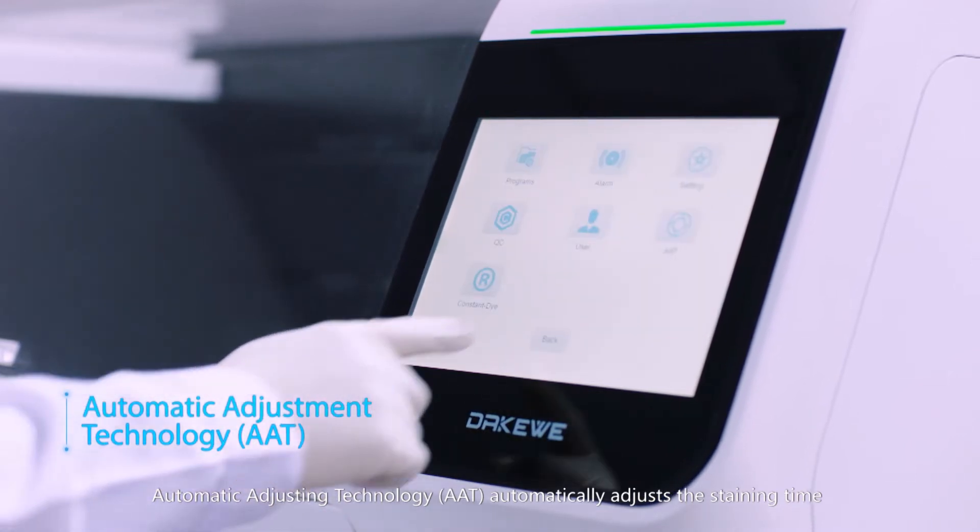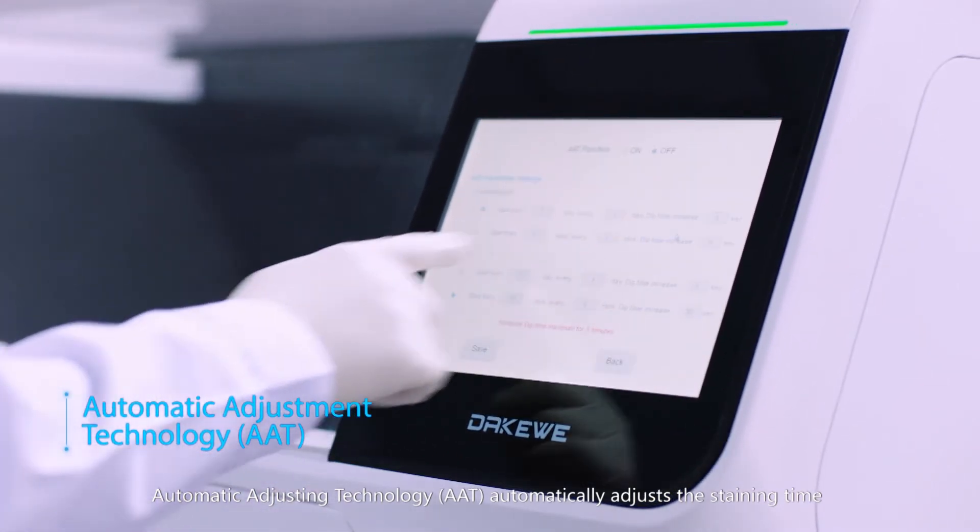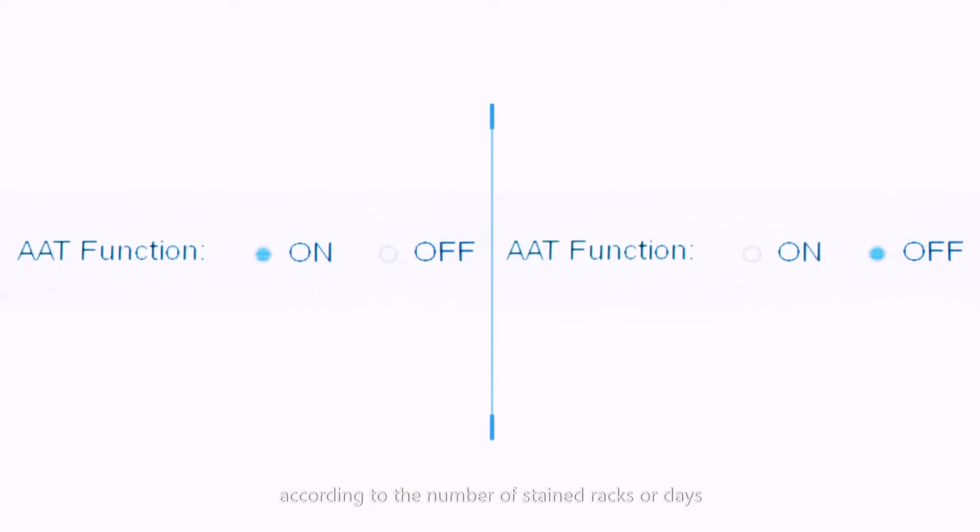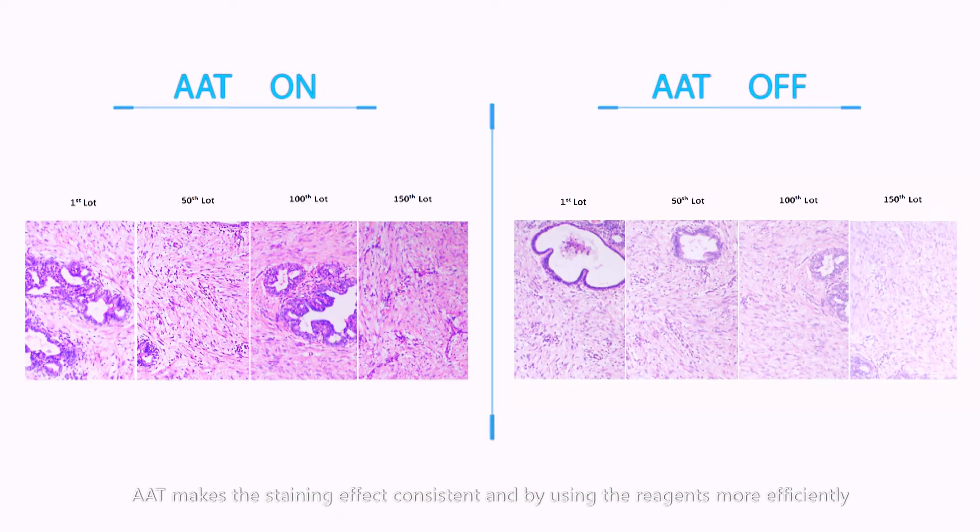Automatic Adjusting Technology, AAT, automatically adjusts the staining time according to the number of stained racks or days. AAT makes the staining effect consistent by using the reagents more efficiently and helps to save reagent costs.